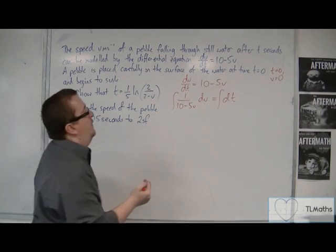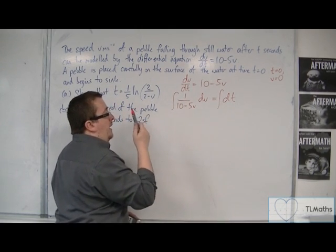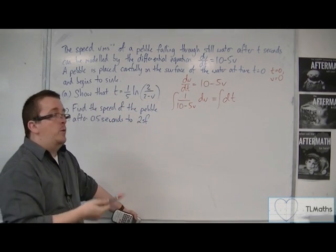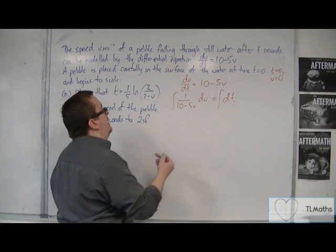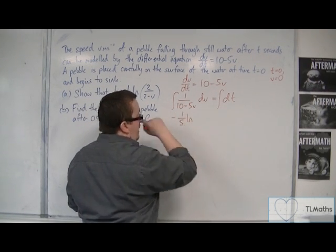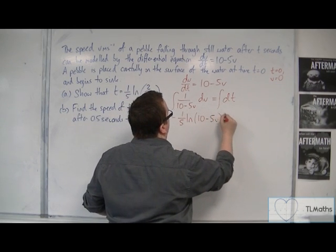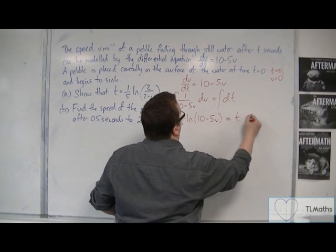Now if this was minus 5 in the numerator, then we'd have a log of 10 minus 5v, but we have only 1. So we've got minus a fifth of what we need. So minus one-fifth log of 10 minus 5v equals t plus c.